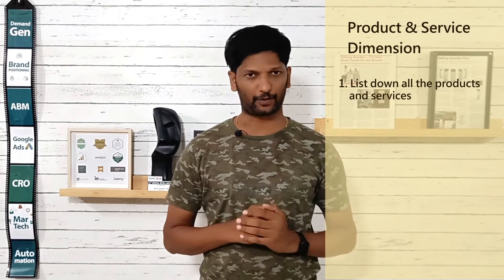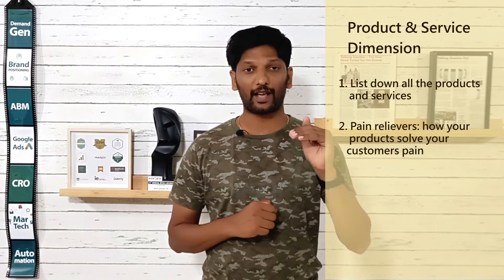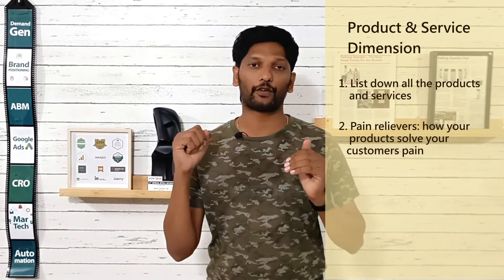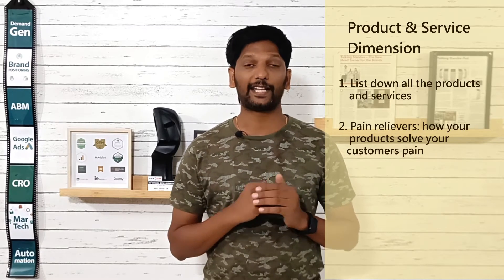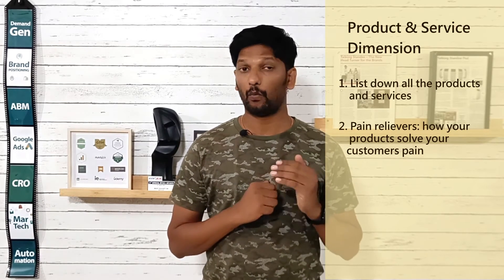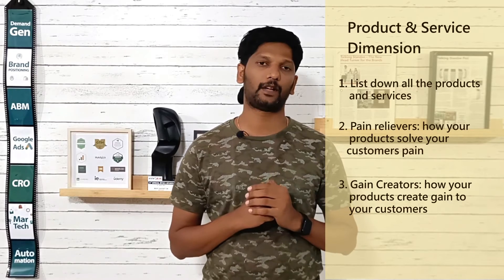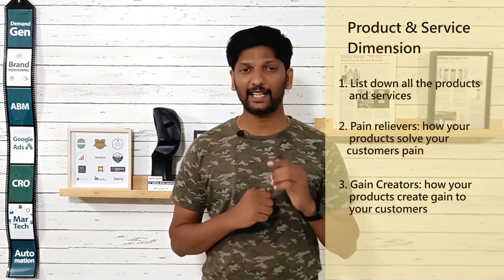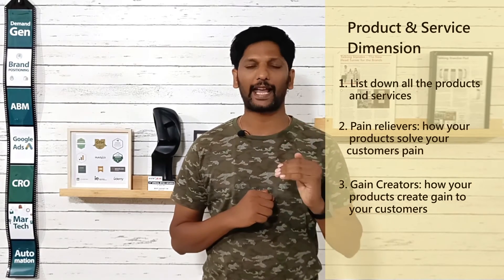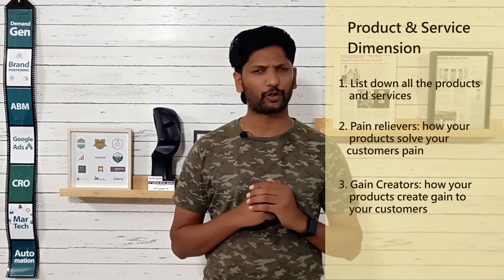Once we are done with the customer dimension, we move to the product and service dimension. List all the products and services you have, and for each one, write down what features or functionalities take away the pain of your customer — these are your pain relievers. Then list all the gain creators — how does your product or service create gain for your customer? Once you have all pain relievers and gain creators, score them.